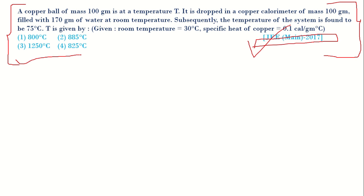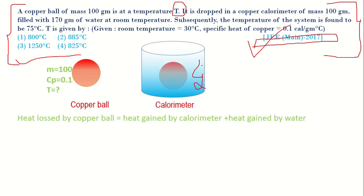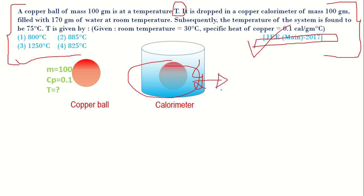In the question it is saying that a copper ball of mass 100 grams is at unknown temperature T and it is dropped into a copper calorimeter of 100 grams. So let us consider a calorimeter of 100 grams and it is filled with 170 grams of water at room temperature.